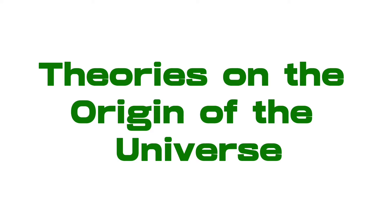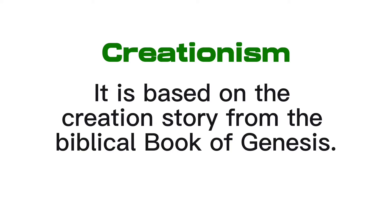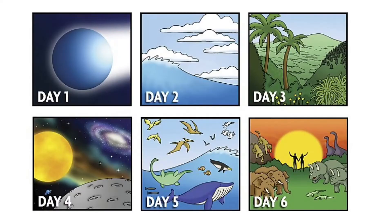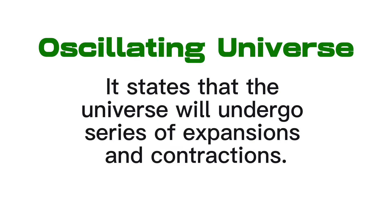Here are some of these theories. The first one is called creationism. If you believe that a divine being created everything, this is what this theory is about. Based on the Book of Genesis, God created the heavens and the earth, the sun, moon, stars, and all of the creatures of the earth in the span of six days, and rested on the seventh day.